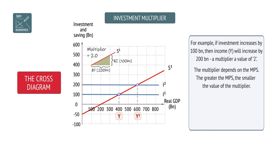With savings line S2, the multiplier falls from 2 to 1.2.